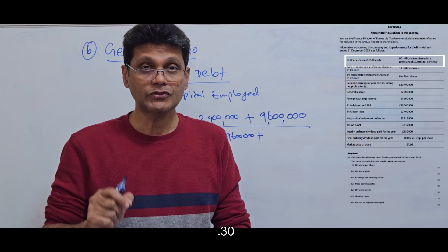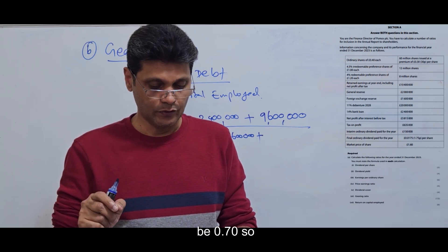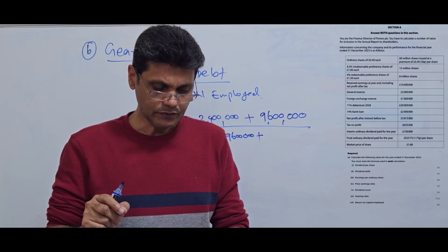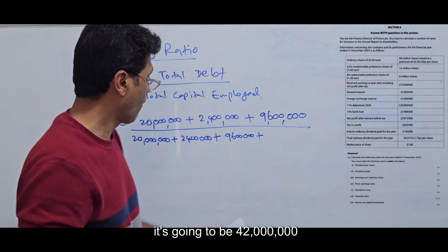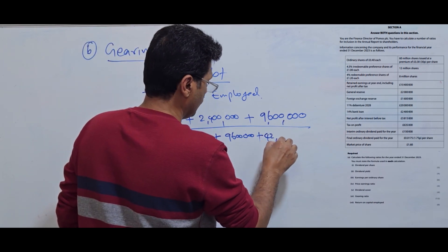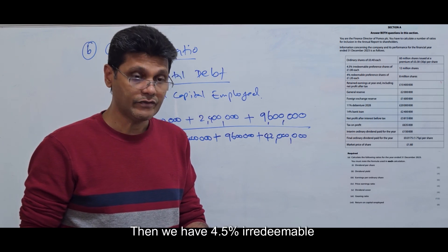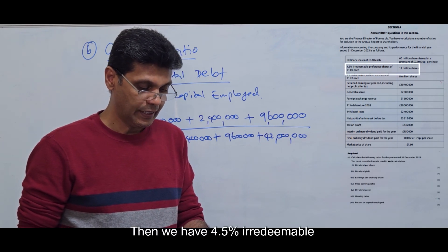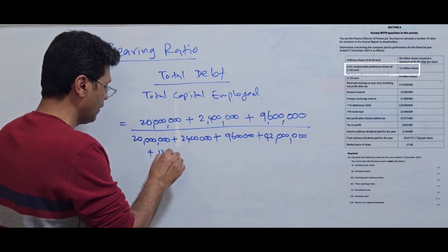Plus 0.30 share premium, so 0.70 times 60 million equals 42 million. Then we have 4.5% irredeemable preference shares, which is 12 million.